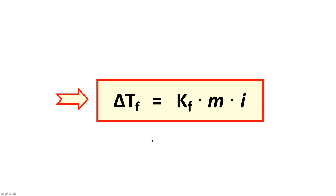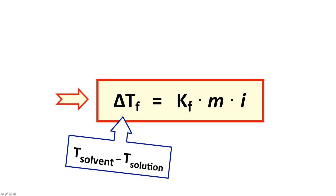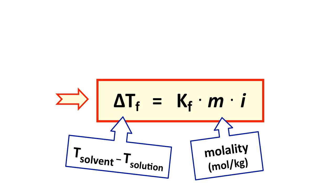The freezing point depression equation is shown here, where delta T sub F represents the difference in temperature between the freezing point of the pure solvent and the freezing point of the resulting solution. M is the molality of the solution, and the amount of freezing point depression is directly proportional to molality. A higher concentration solution has a larger freezing point depression; a lower concentration solution has less of a freezing point depression.